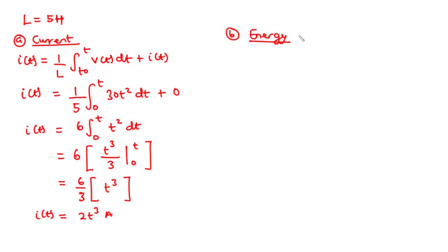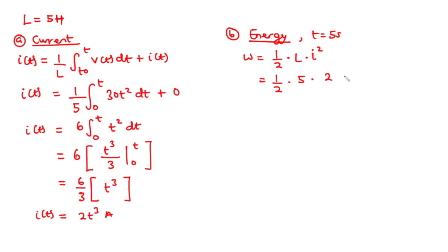The energy w is given by one half times L times i squared. Here we have one half times L, which is 5, times the current expression squared — that is (2t³)². So half of 5 is 2.5, and 2 squared is 4, giving us t to the power of 6. So 2.5 times 4 equals 10, giving us w = 10t⁶.